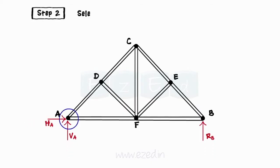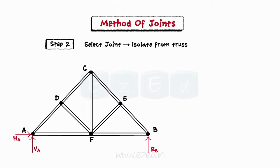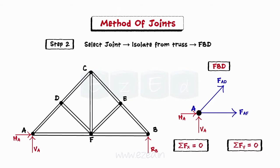Step 2: Select a joint from the truss which only has two members with unknown forces. Isolate the selected joint from the truss and draw its free body diagram. We select joints with only two unknown members as only two conditions of equilibrium can be applied to analyze a joint.